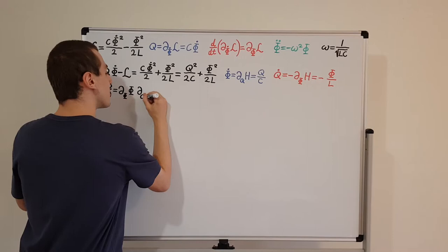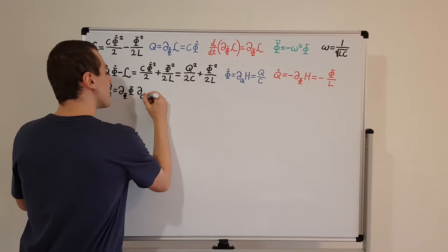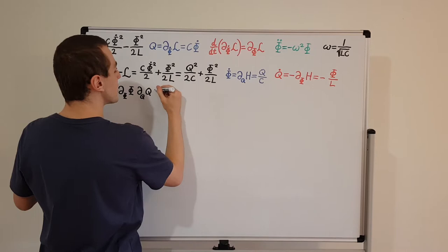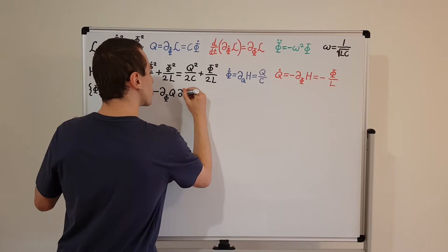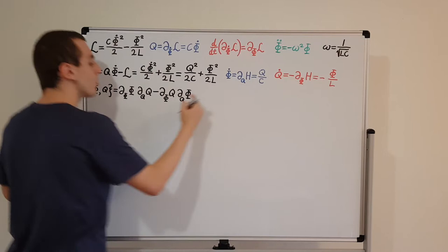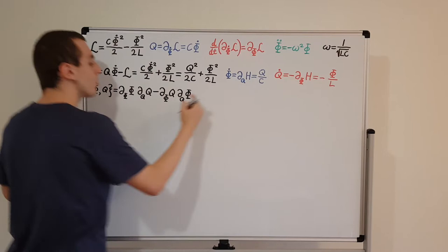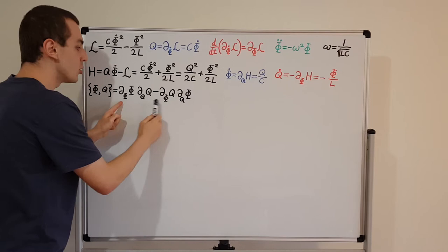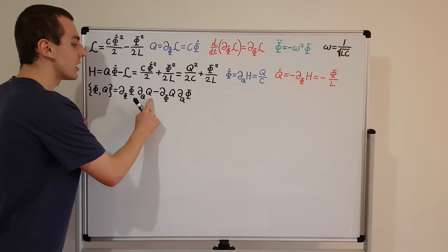Then we multiply that by the partial derivative with respect to Q of Q, and then we subtract the swapped-over version: we need the partial derivative with respect to phi of Q, times the partial derivative with respect to Q of phi. You can see I've kept the derivatives in the same order — phi, Q, phi, Q — but swapped around which functions we differentiate: phi, then Q, then Q, then phi.